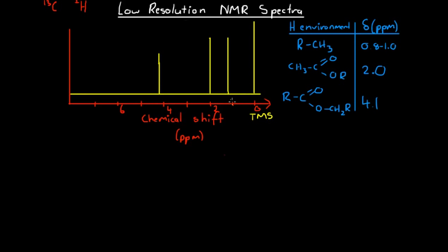We've got peaks at chemical shifts of just over one, a chemical shift of two, and a chemical shift of 4.1 or 4.2 here. So how do we analyze low-resolution NMR spectra? Basically, there are two things that we look for in any spectra. We look for the chemical shift of our peaks, and the height of our peaks.